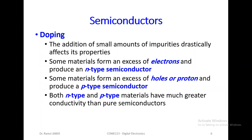So we get N-type and P-type semiconductor. N-type semiconductor has an excess of electrons (negative). P-type semiconductor has an excess of protons (positive). Is that clear?